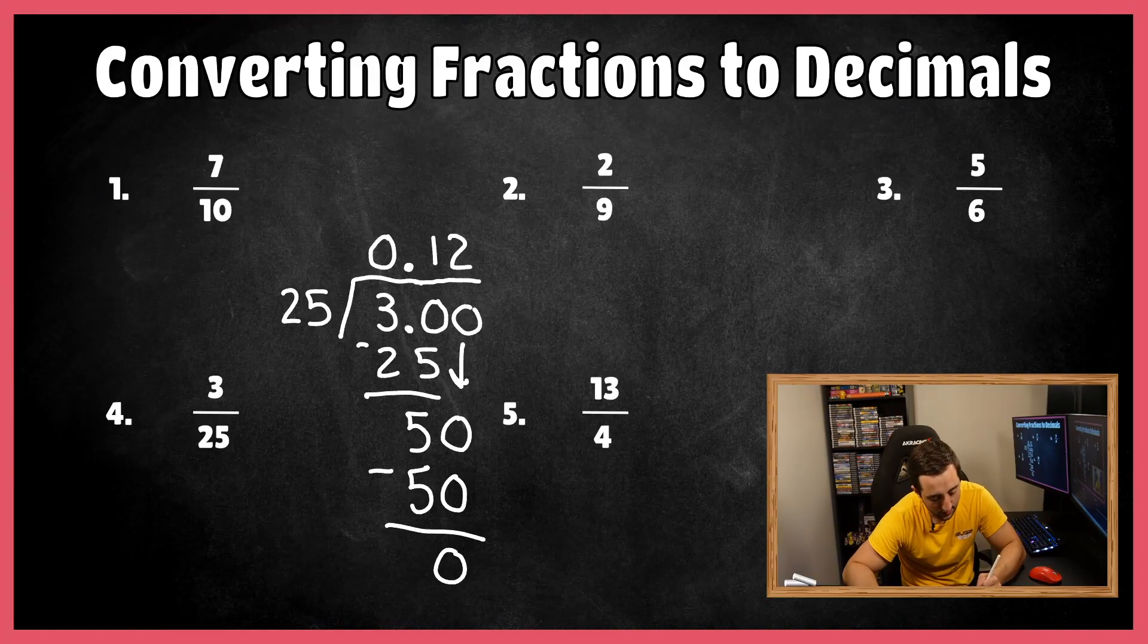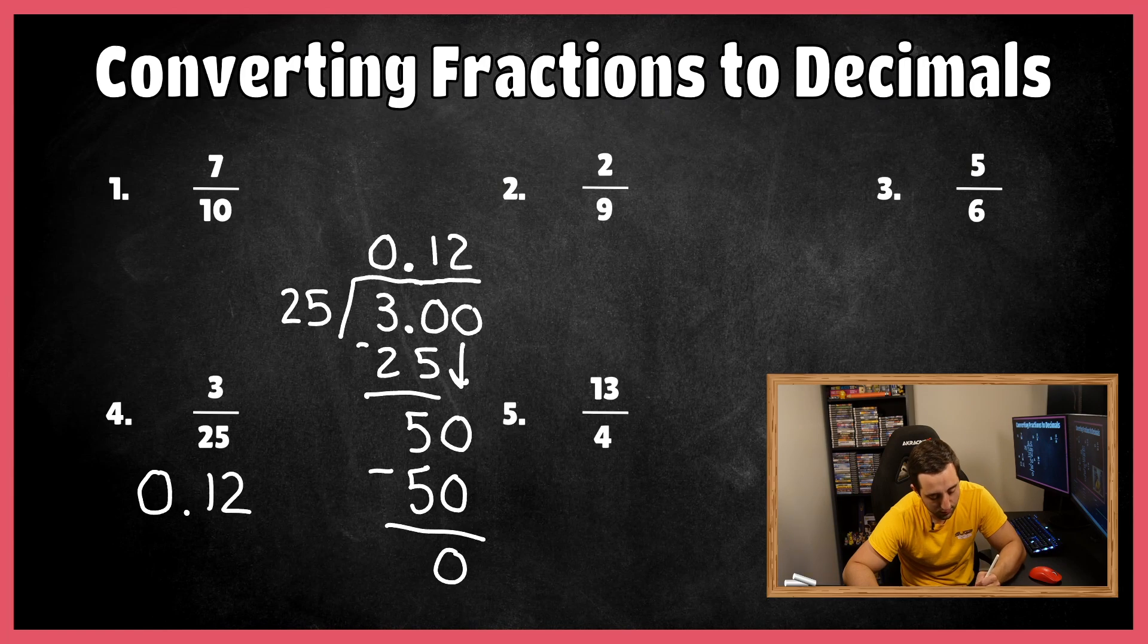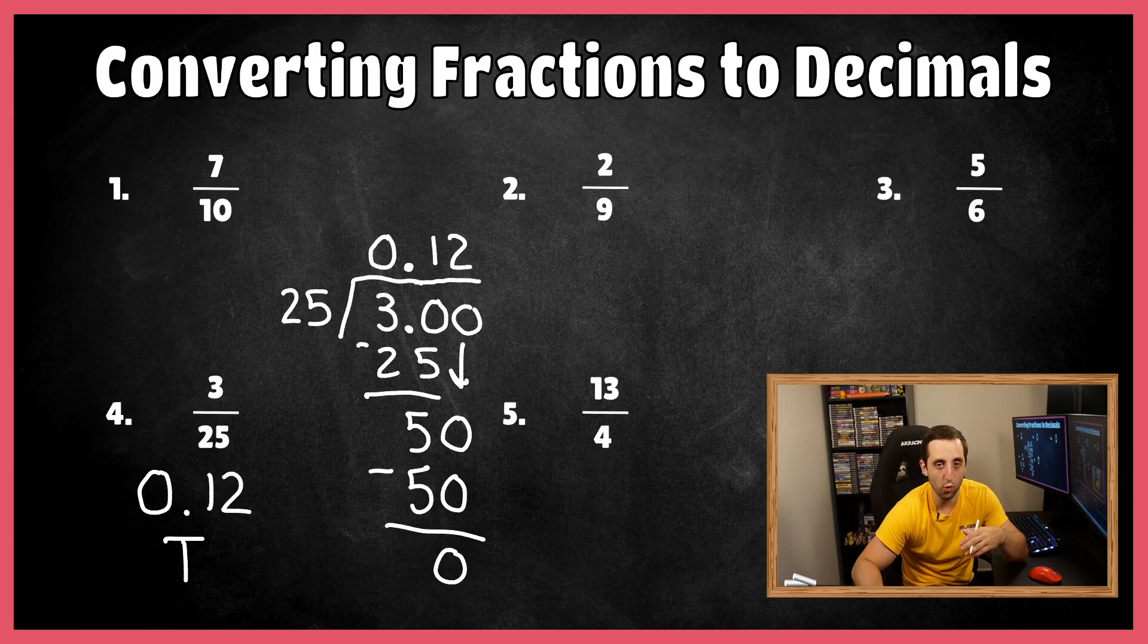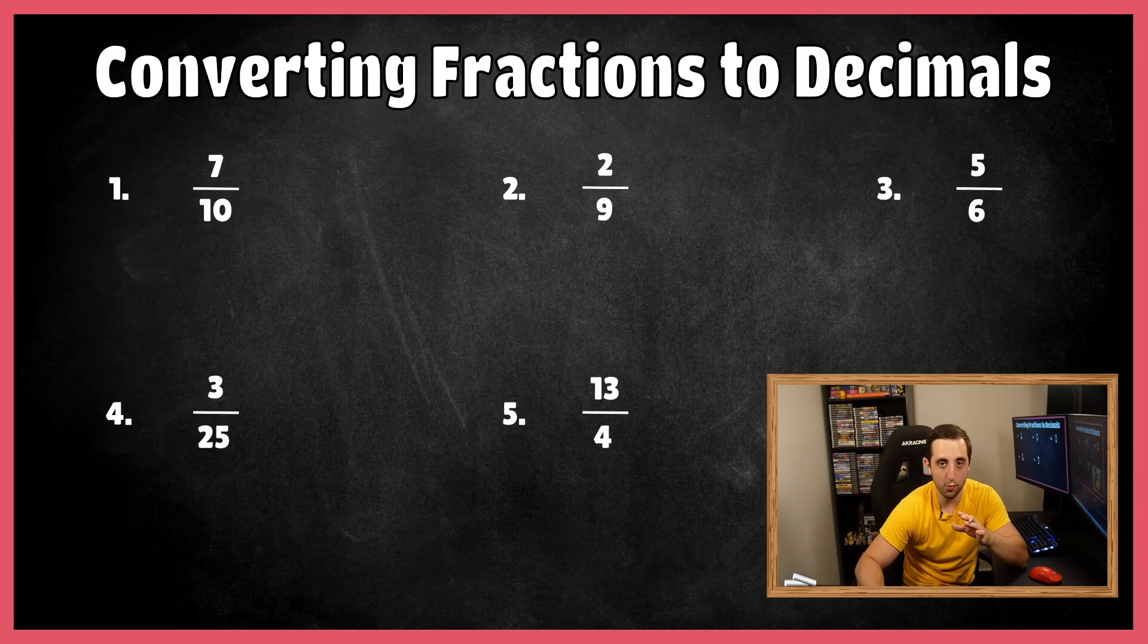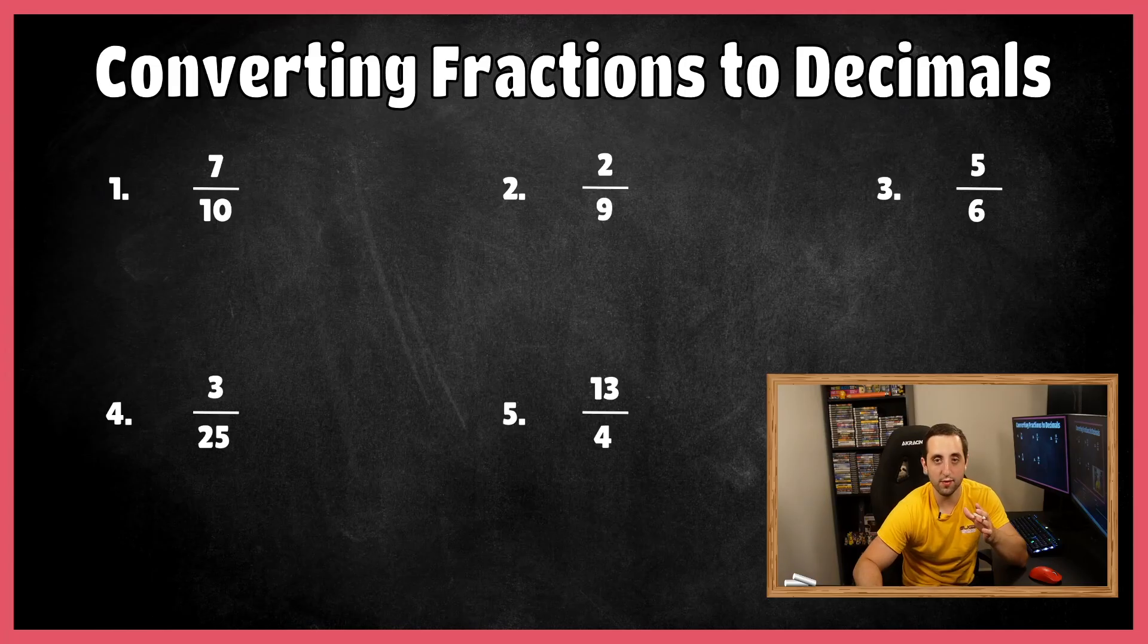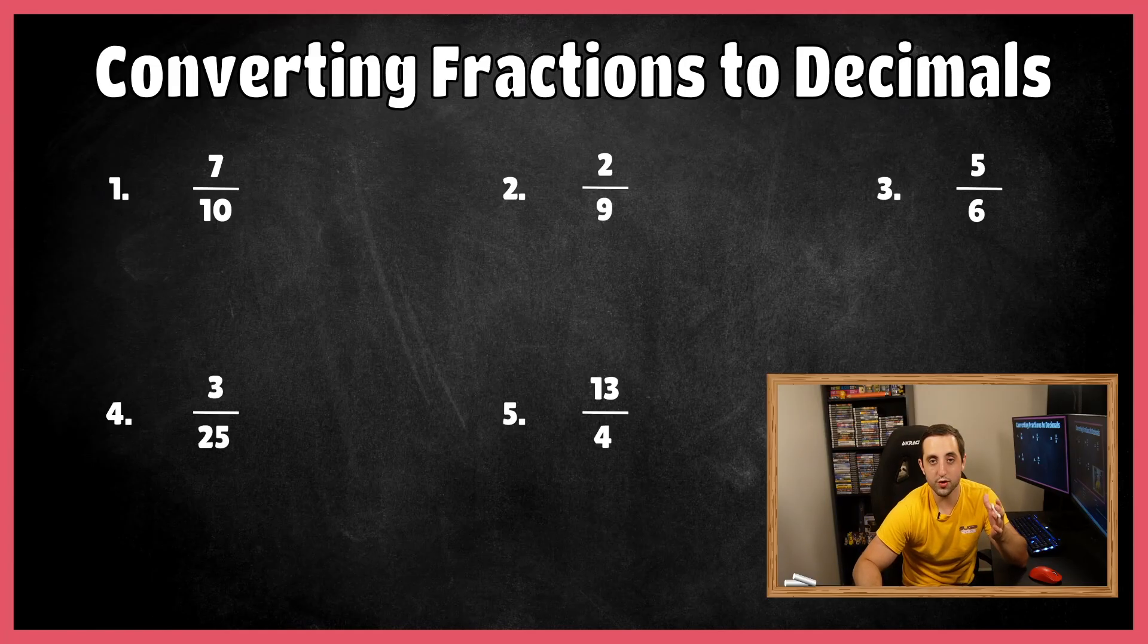So final answer in this case is a terminating decimal. And we get 0.12 or 12 hundredths for our answer. So I'm just going to put a T there for terminating. And then finally, very last one before you try some out on your own. You're going to notice this one is a little bit different because you might see this from time to time. This is an improper fraction, right? I also want you to note that this could have also been a mixed number. So 13 fourths, if you had it as a mixed number, really is three and one-fourth.